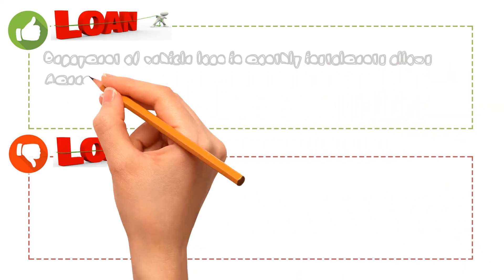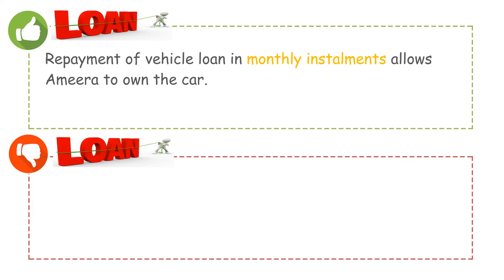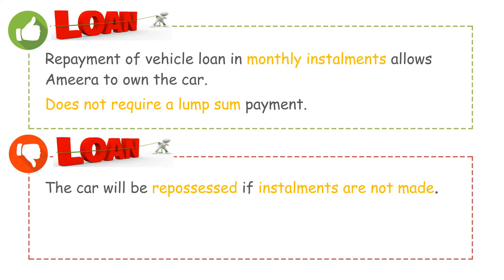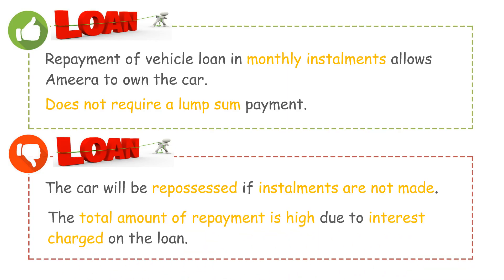Advantages and disadvantages of loan payment. Advantages: repayment of a vehicle loan in monthly installments allows one to own the car without requiring a lump sum payment. Disadvantages: the car will be repossessed if installments are not made, and the total amount of repayment is high due to interest charged on the loan.